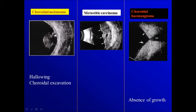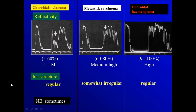In choroidal melanoma, we can see hollowing or excavation at the base where the cells invade the choroid. Choroidal hemangioma is characterized by absence of growth. Internal reflectivity is low to medium in melanoma, medium to high in metastatic carcinoma, and high in choroidal hemangioma. Internal structure is regular in melanoma and hemangioma, and somewhat irregular in metastatic carcinoma.